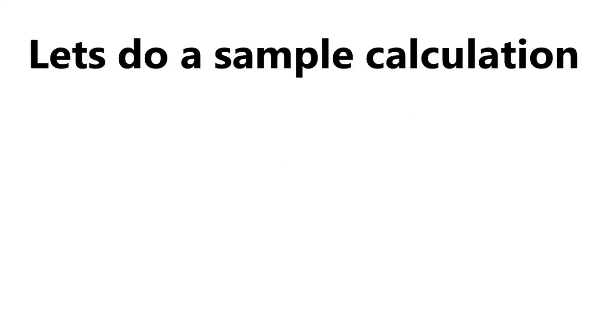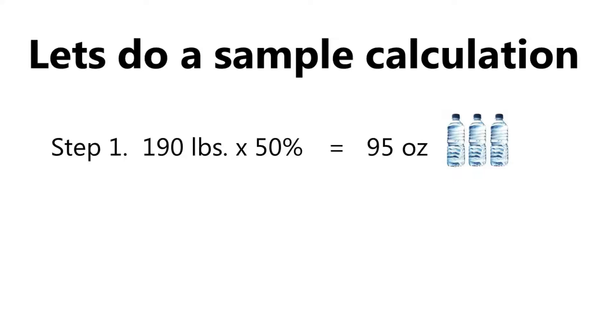Let's do a sample calculation. For our example, we'll use a 190 pound person. Step 1 is 190 pounds times 50% equals 95 ounces. Rounded off, that's six 16-ounce bottles of water.